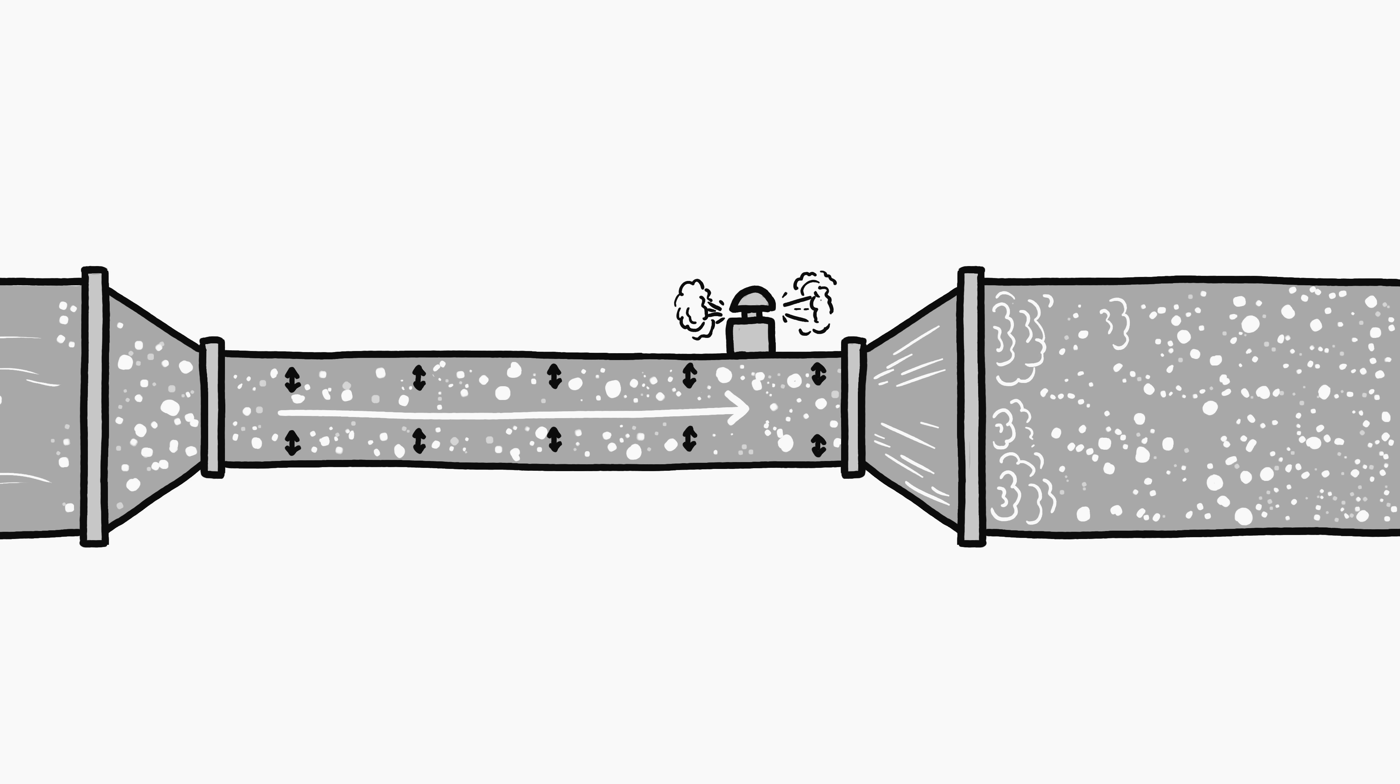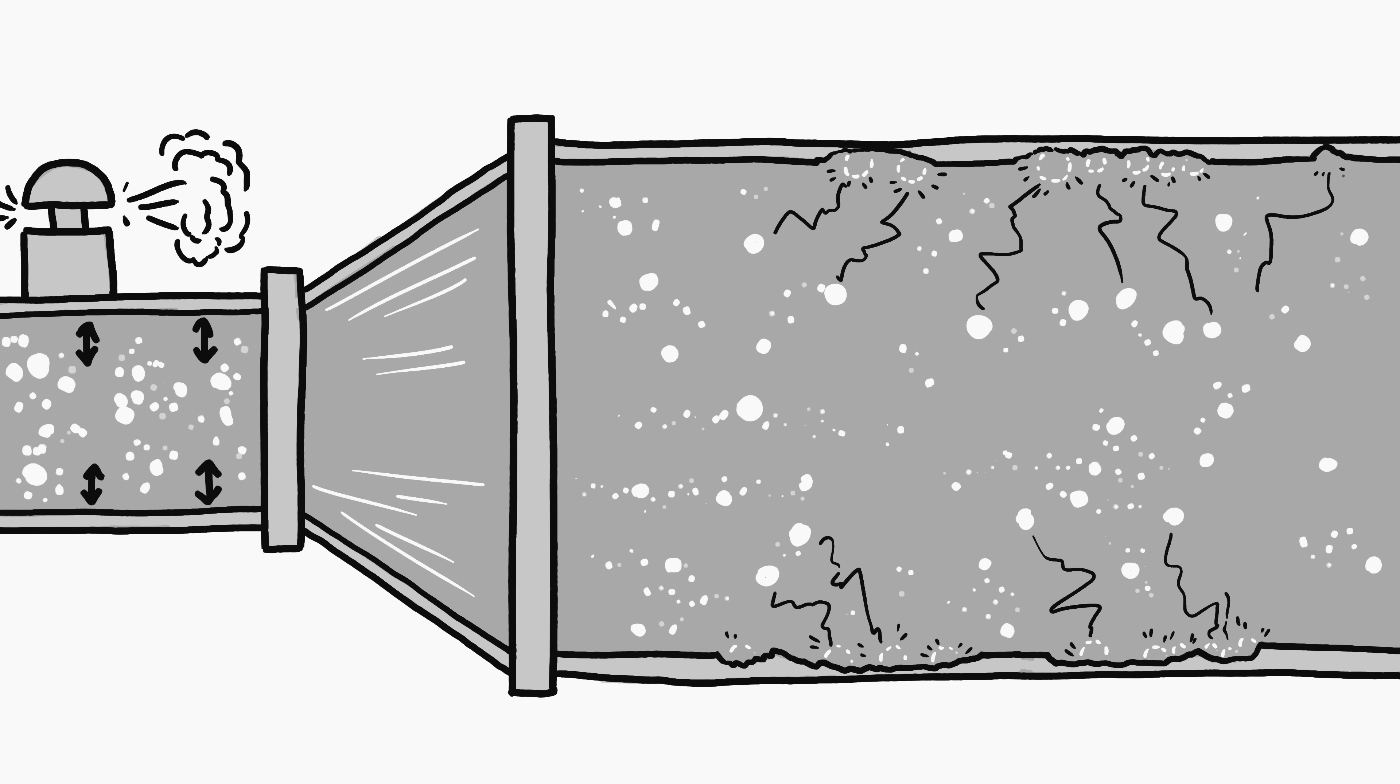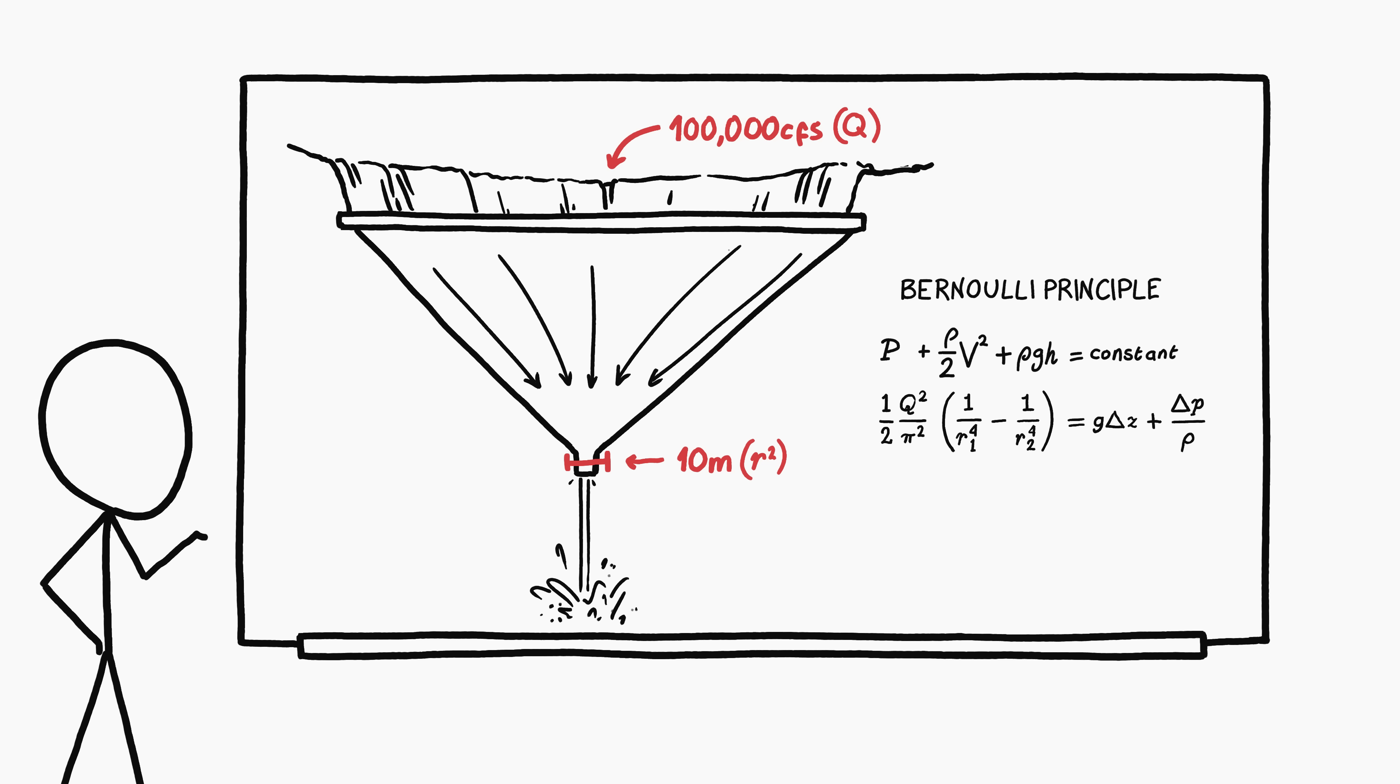Cavitation is also bad for the pipe itself, because when the bubbles do eventually collapse, the force of the implosion can erode the walls of the pipe and lead to structural failure. A rough calculation suggests that Niagara Falls, at its base, could only be funneled into a pipe as small as around 10 meters across before cavitation starts to become likely.